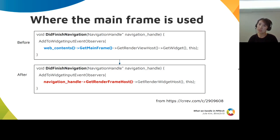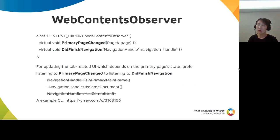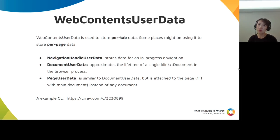Let's imagine that if didFinishNavigation is triggered by pre-rendering, then the code will work with the wrong target. There are many methods we could use from WebContentsObserver. Among them, didFinishNavigation is one of the methods we use when we check something for top-level UI. In that method, if we also check primarySameDocumentCommitted, primaryPageChanged would be preferred.